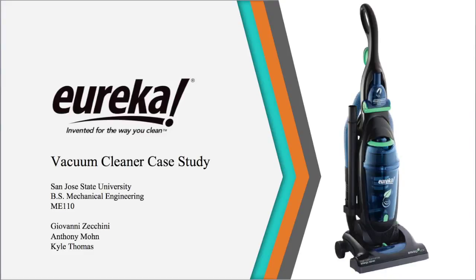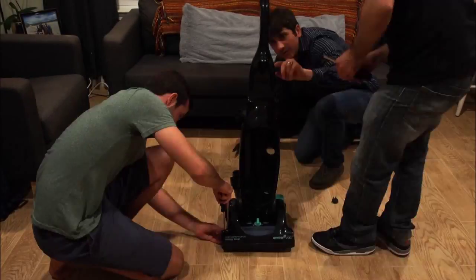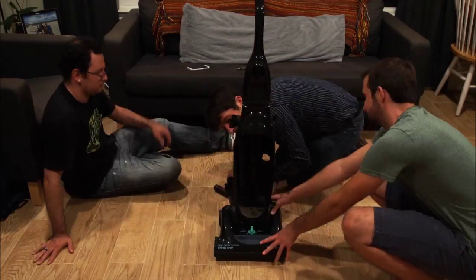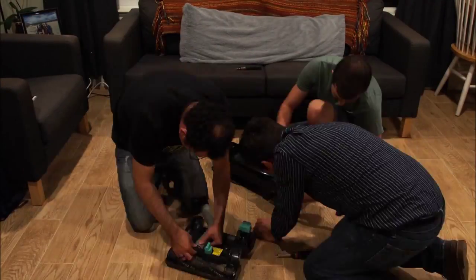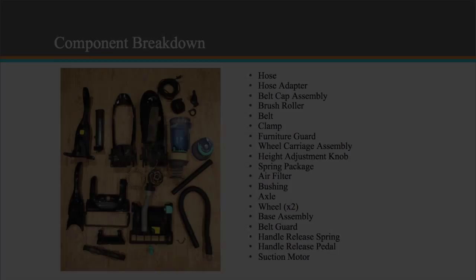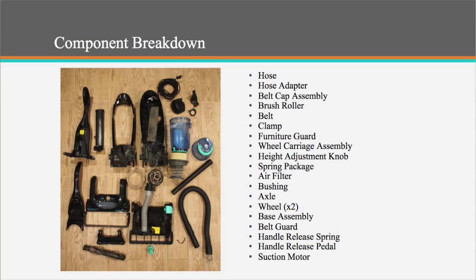In this video, we are going to analyze in detail how some parts of the Eureka EnviroPack vacuum cleaner were manufactured. After disassembling the vacuum, a list of parts was generated.